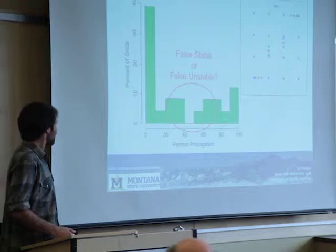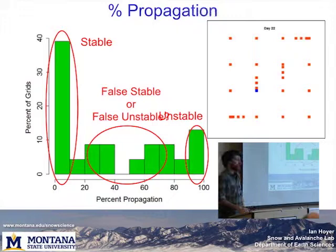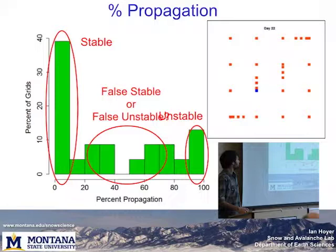What's bothering me is all the grids in the middle — the days when 50% of my ECTs propagated and 50% didn't. The question is: why is that? Is the snow depth more variable? Is something else going on?